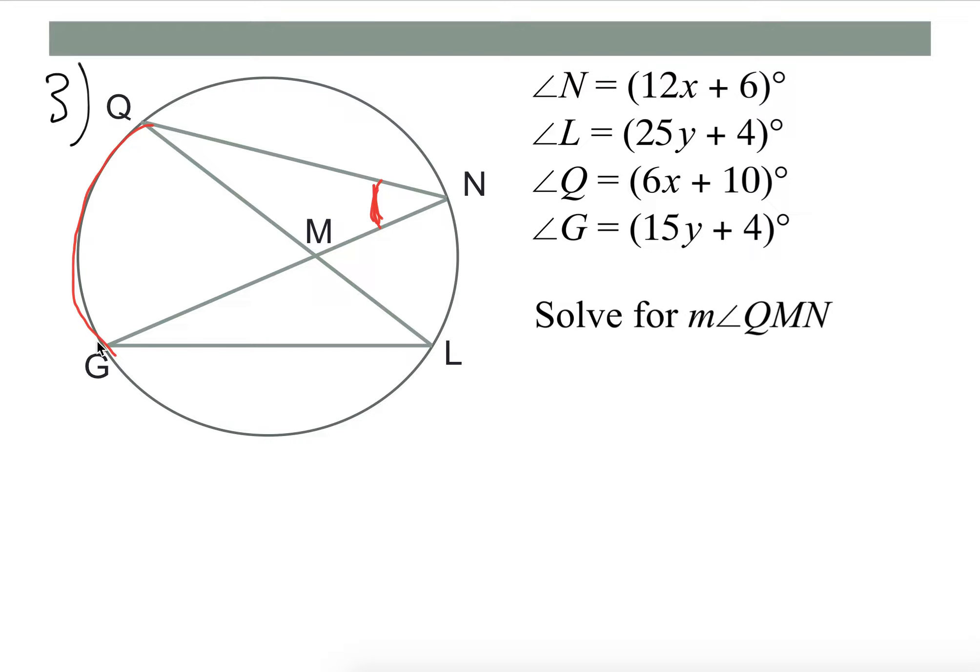So if you think which angle also intercepts this arc, well the answer would be L. Right, L, that inscribed angle intercepts the arc QG as well. So because N and L both intercept arc QG, then it means angle N and L are congruent.